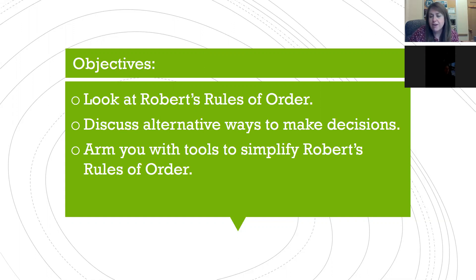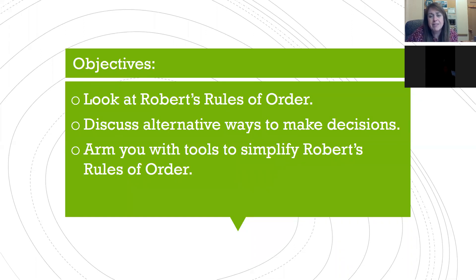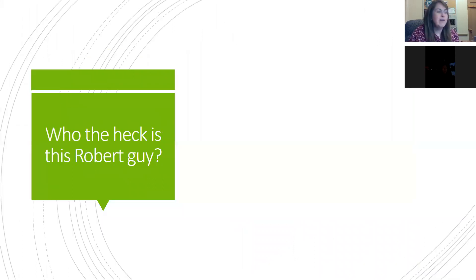I also want to arm you with tools to simplify Robert's Rules of Order. Some of you may be long-time 4-H'ers or FFA members who've been doing Robert's Rules your entire life and think you can't break away from them. I understand — I've been there. I want to give you tools to simplify them and make them more conducive to a 4-H club meeting where you have eight-year-olds to 18-year-olds at the same table.